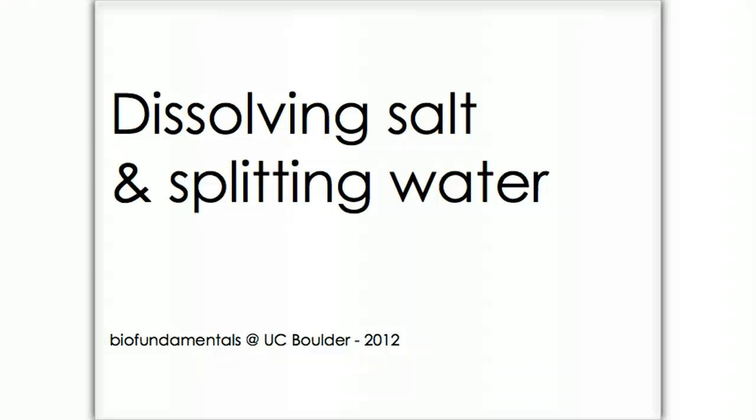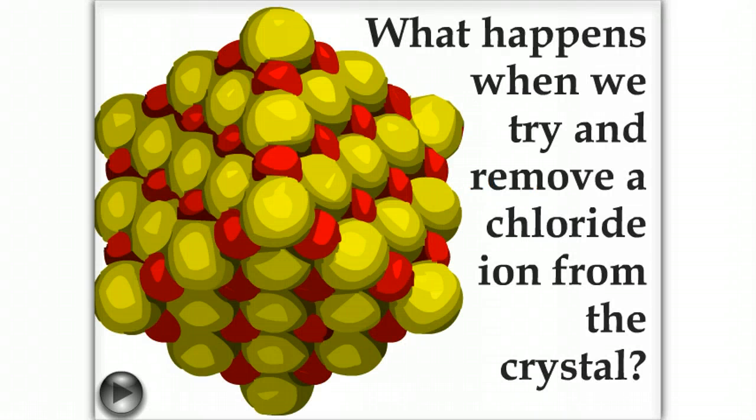Dissolving salt and splitting water. The bonds between sodium and chlorine atoms in table salt are totally ionic. A salt crystal is made up of equal numbers of oppositely charged sodium and chloride ions.